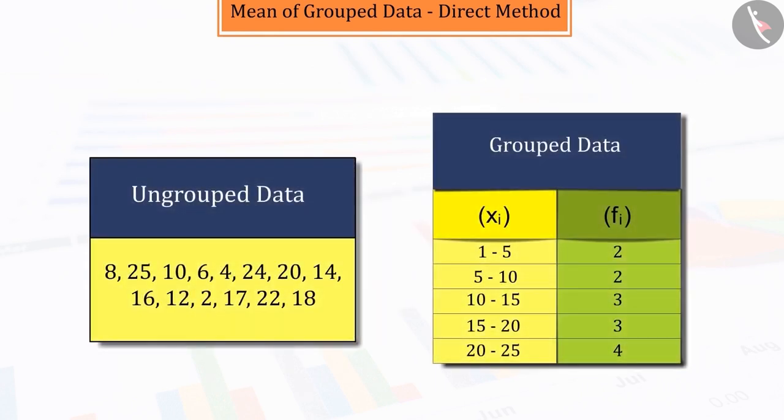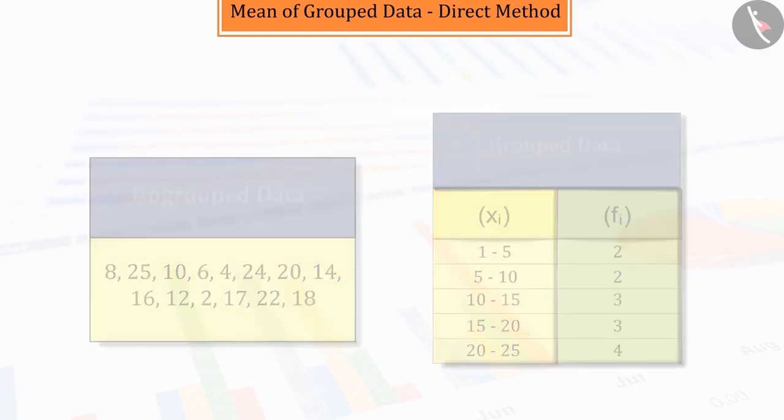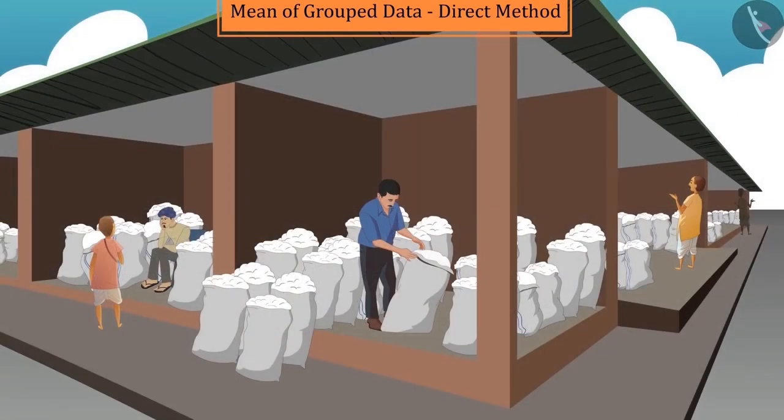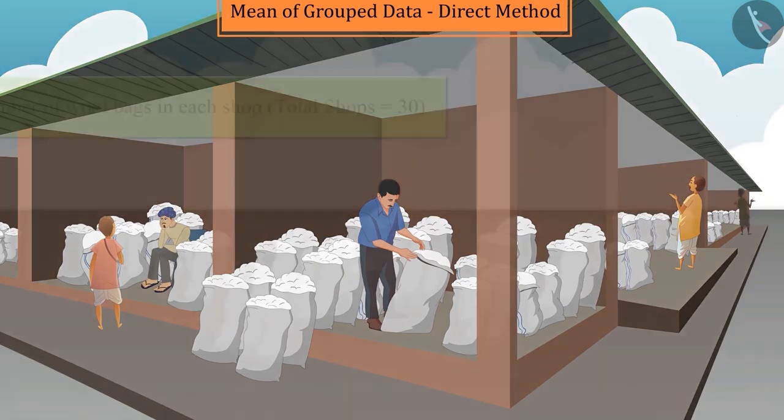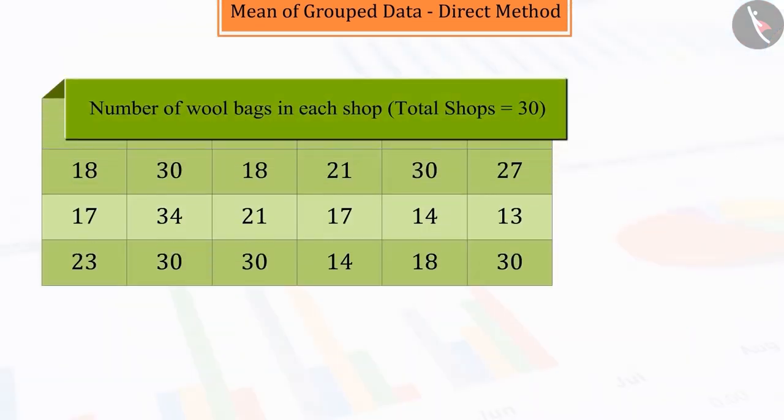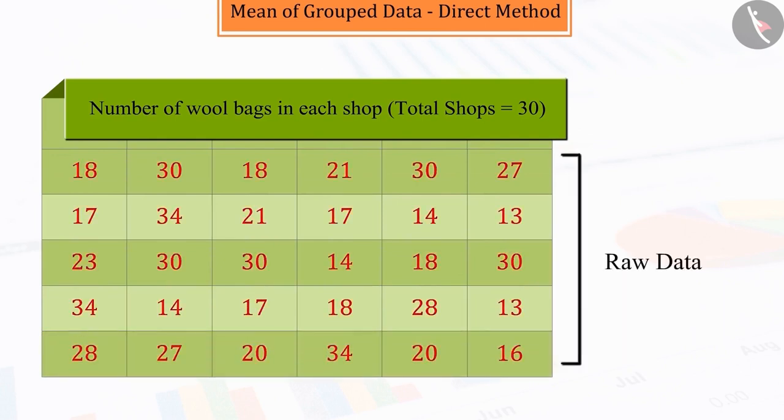You may recall that in the previous class, we learned to organize data into ungrouped and grouped frequency distributions. Let's take a look at it. The number of individual bags of wool kept in the 30 shops located in the wool market is represented as follows. We refer to this as raw data.